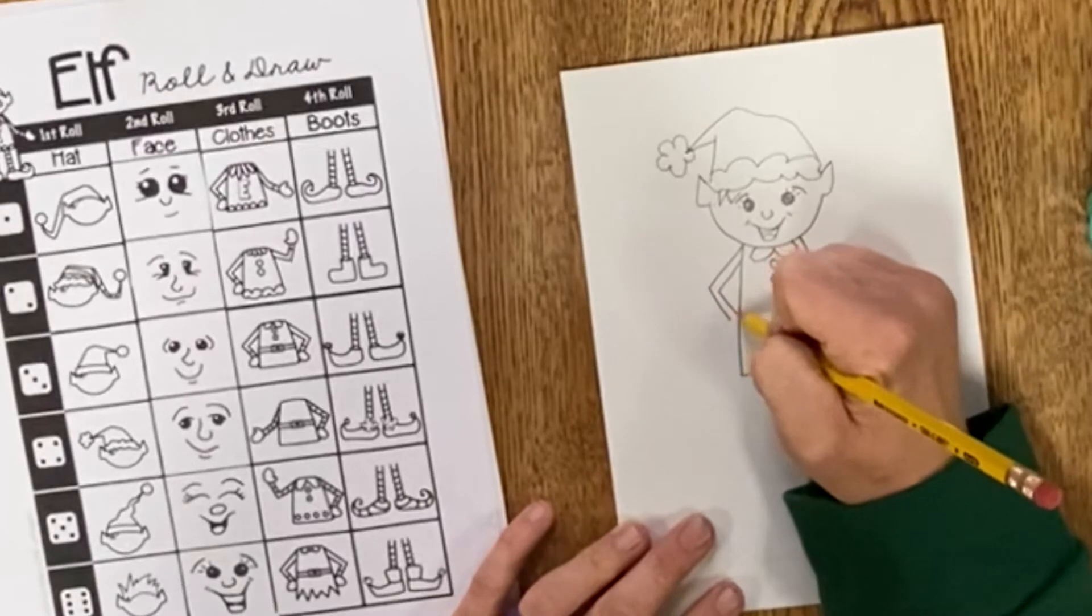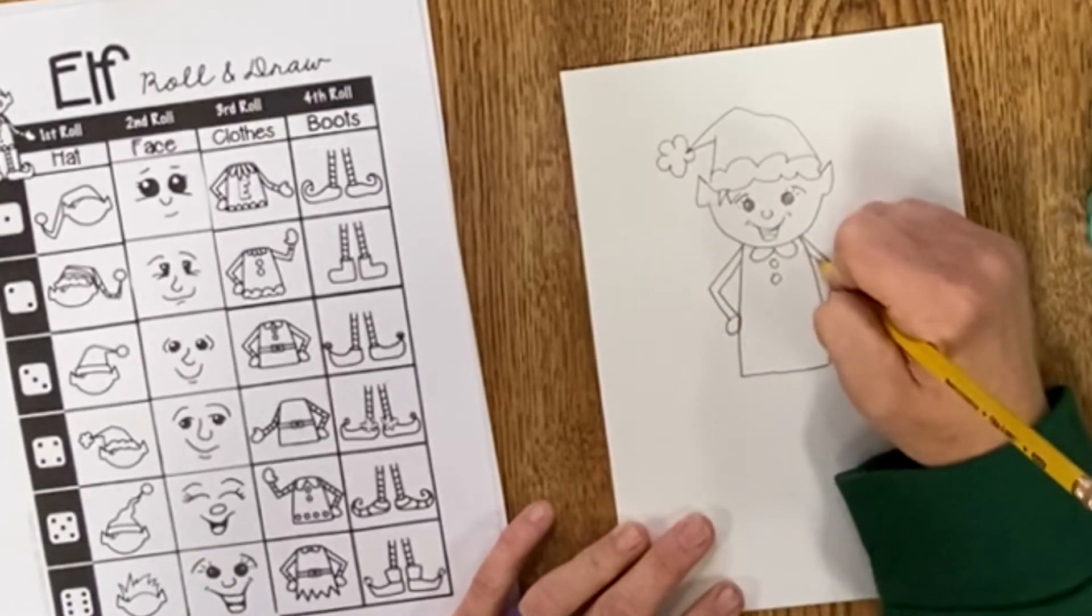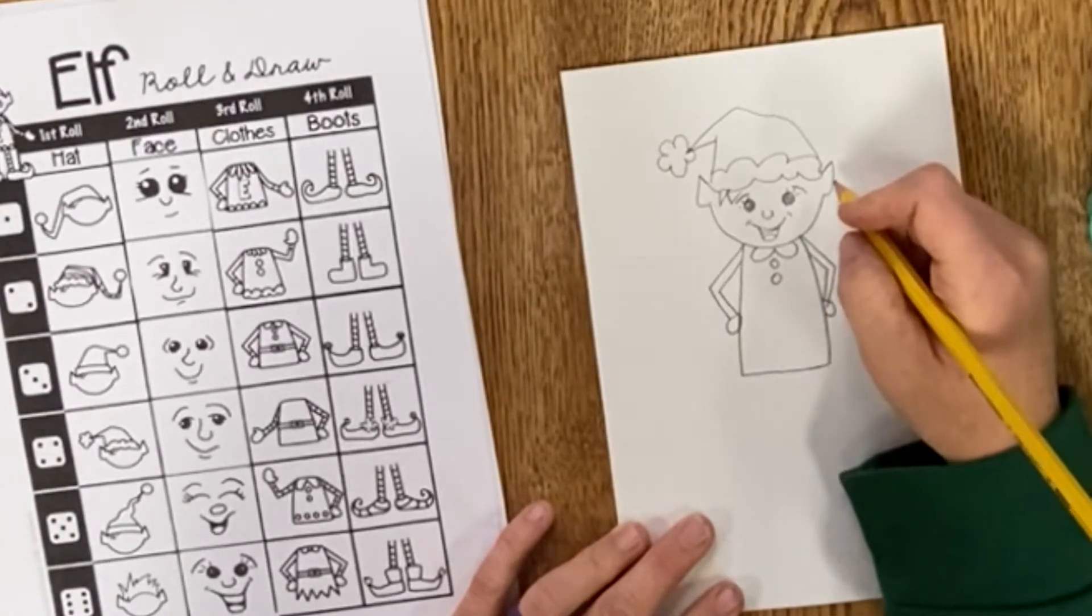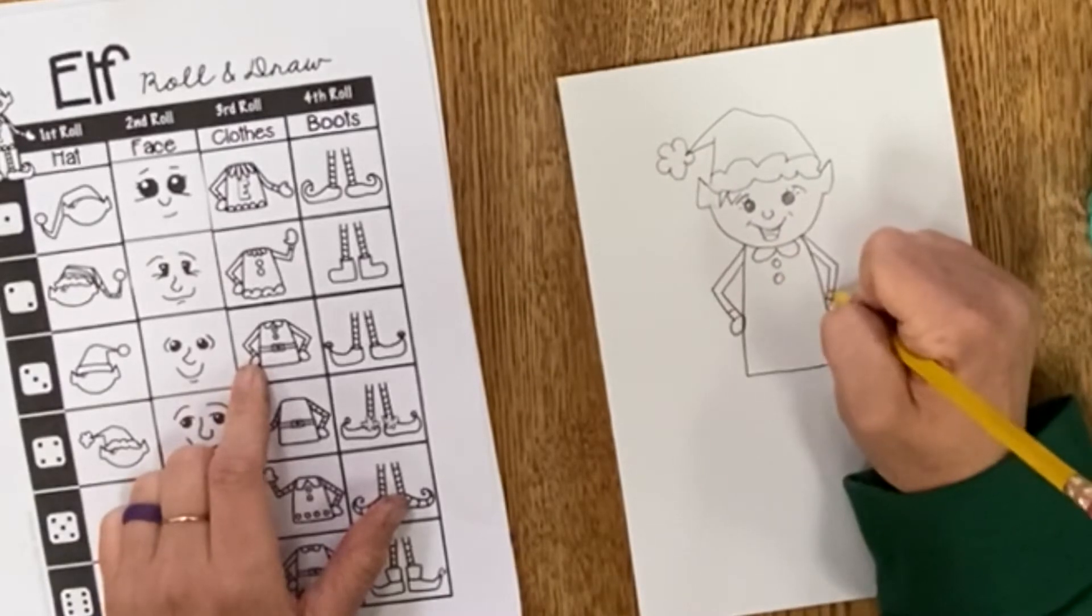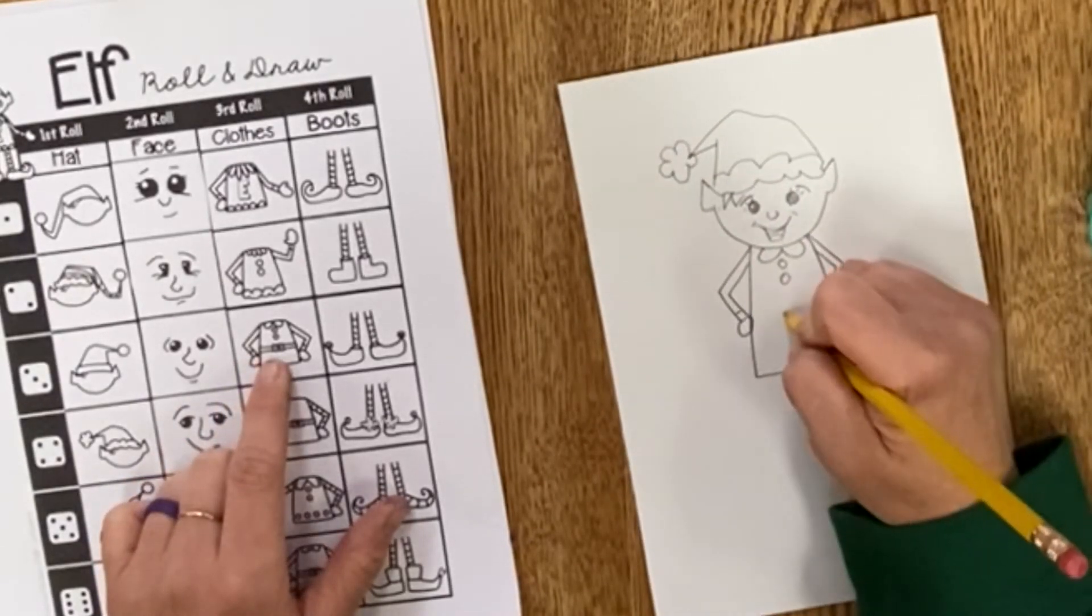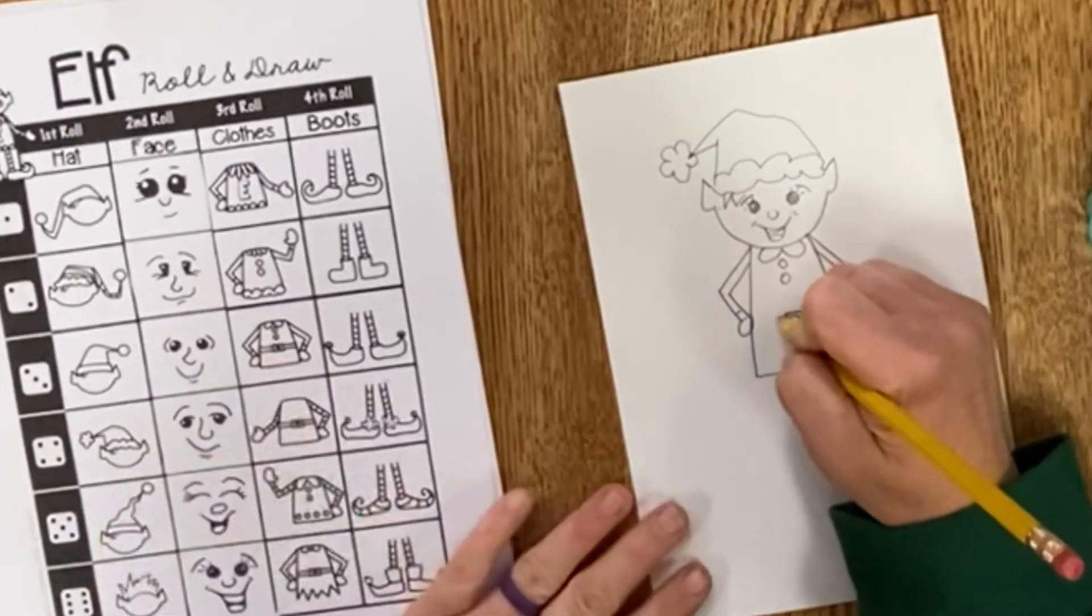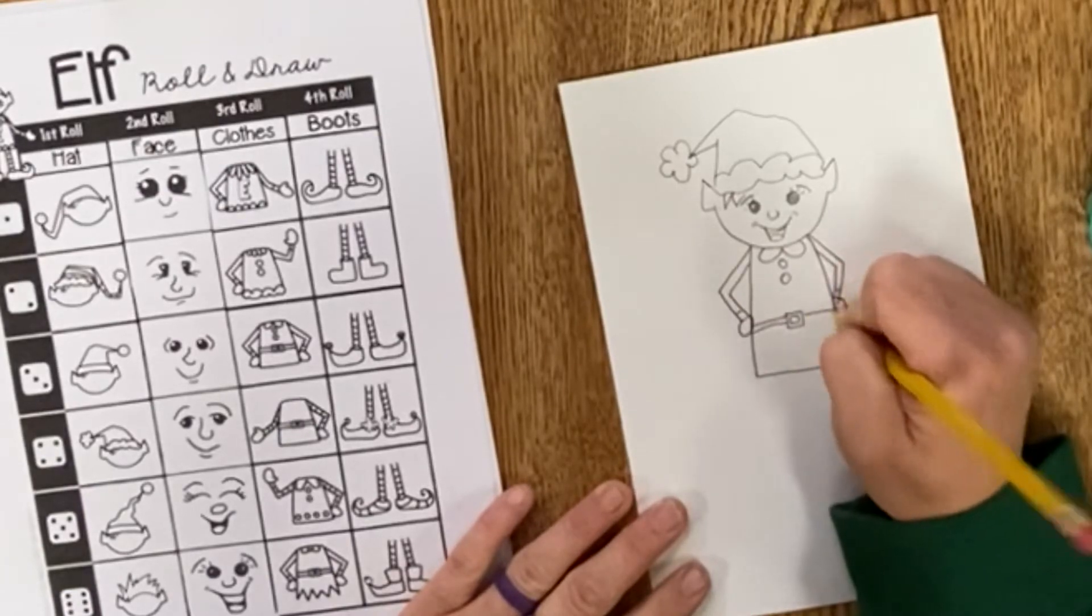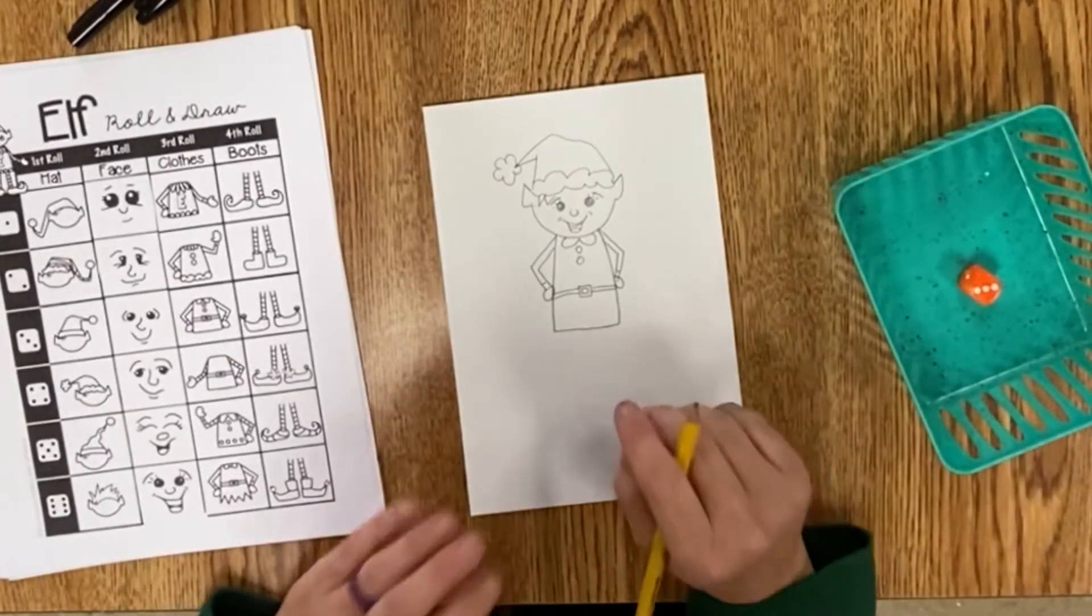Bent line, thicken it up, oval for the hand. He's got his hands on his hips. Okay, we've got a belt buckle and then I draw lines out to make the belt.